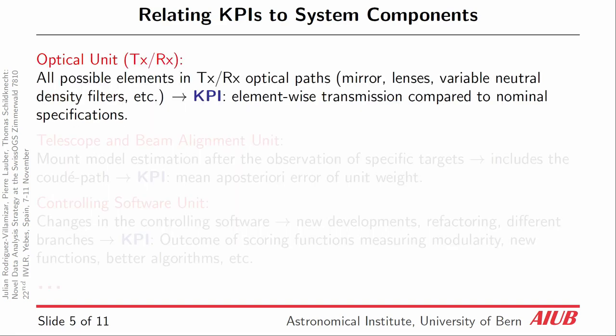Furthermore, within our optical units, we have different lenses, mirrors, and filters. We measure the transmittance for those elements and compare to the nominal specifications. This is relevant because you may have changes in the alignment of the different optical elements, but also because the coating is a function of time and there may even be dust. So one has to from time to time clean the different elements.